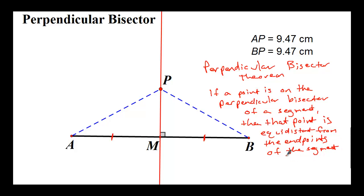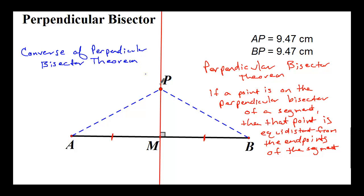This is very similar to the one we did about angle bisectors, except it's about perpendicular bisectors. Just like angle bisectors, this one has a converse — the Converse of the Perpendicular Bisector Theorem. If a point is equidistant from the endpoints of a segment, then the point is on the perpendicular bisector of the segment.